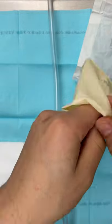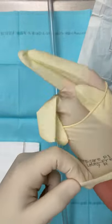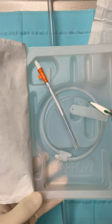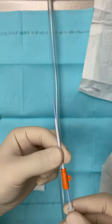Start with an 18 or 20 gauge IV, don sterile gloves. This kit comes with a scalpel, a white 7 French catheter with a blue dilator in it.